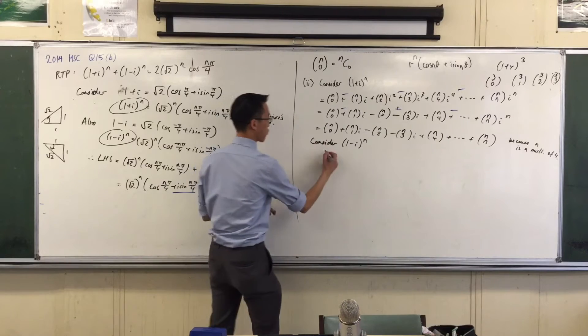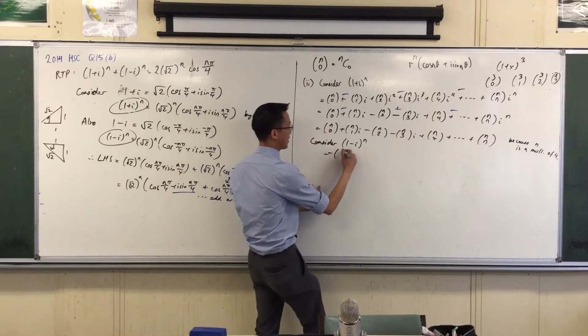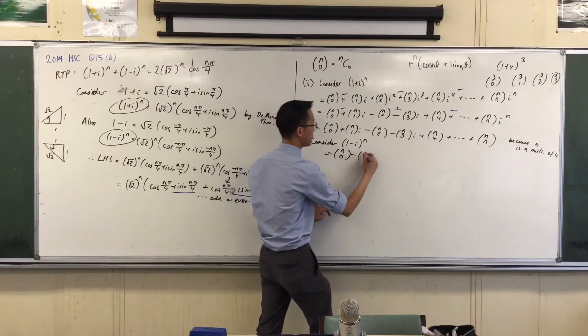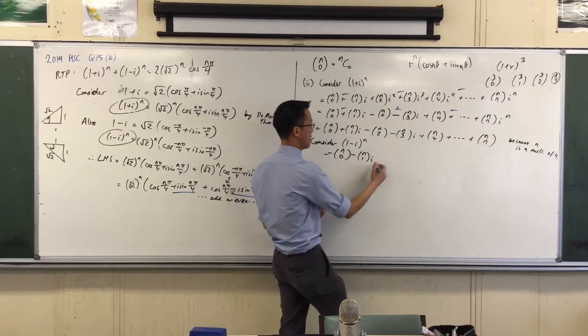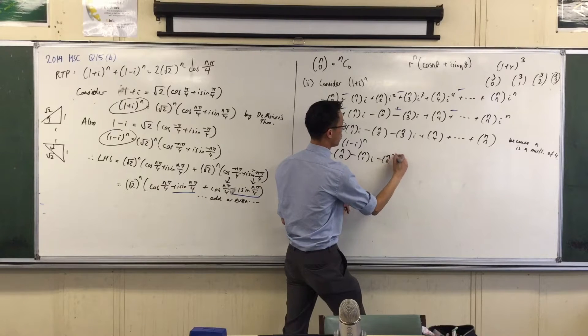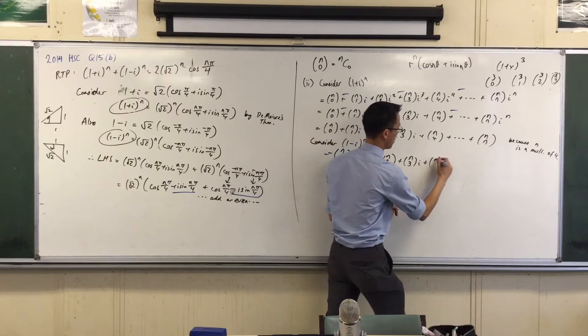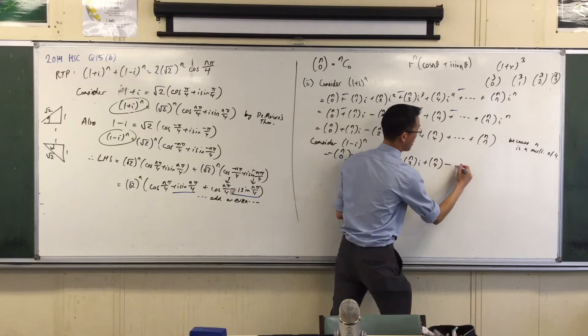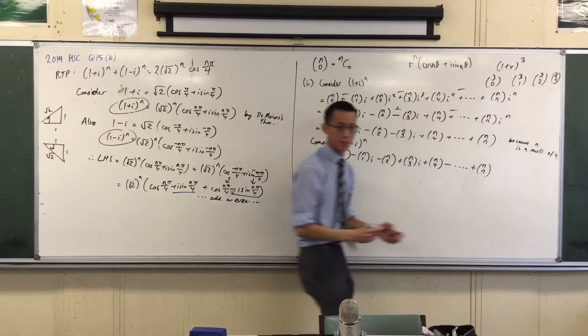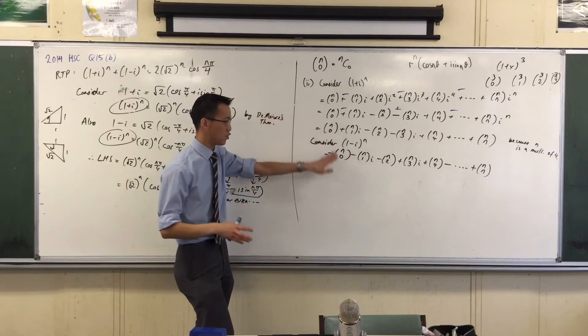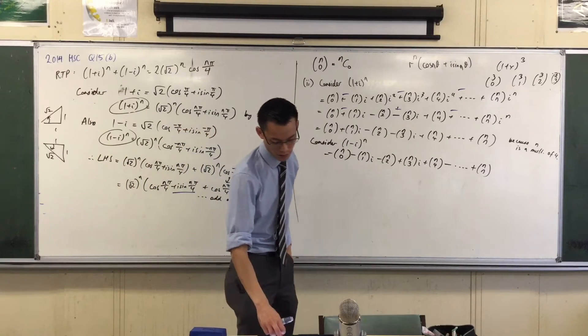So therefore, I'm just going to write this out. Having done all of those lines, I can say it's n0 minus, from there, n1i minus n2 plus n3i plus, that one will be a minus. There we go. So you can write these extra lines with your alternating signs just to be sure, but you will end up with this.